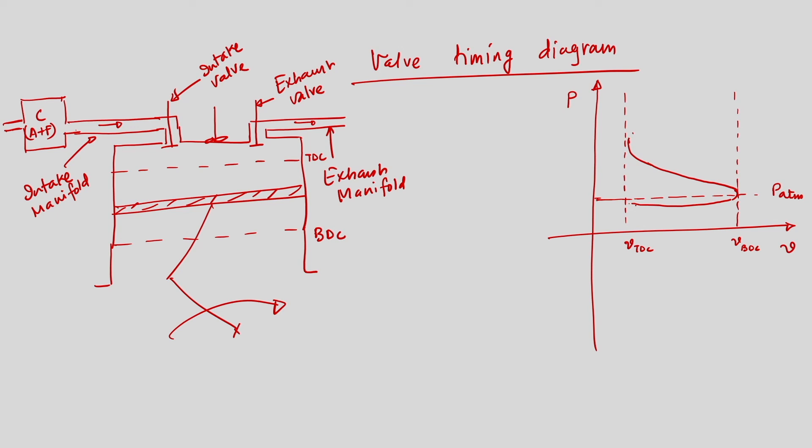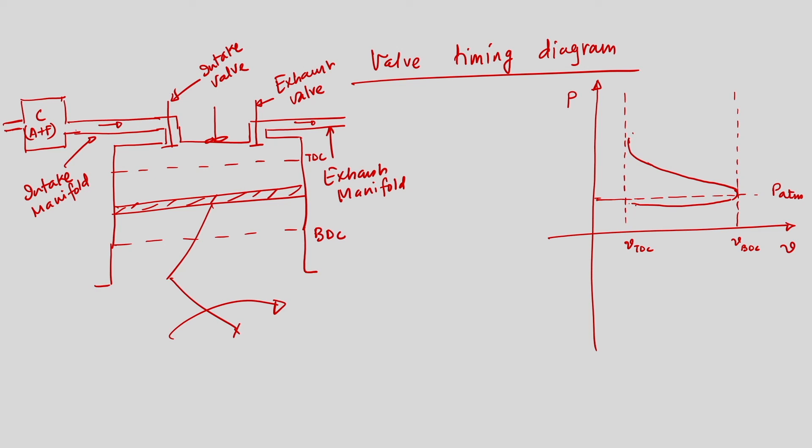When the piston reaches TDC at the end of the compression stroke, the spark plug is switched on. The spark plug ignites the charge, causing combustion — an exothermic reaction — which leads to a huge rise in pressure and temperature. This high-pressure, high-temperature gas creates a thrust on the piston face, pushing it from TDC to BDC during the power stroke.